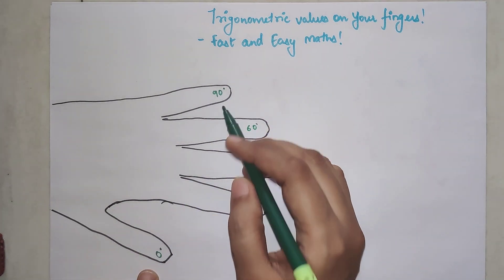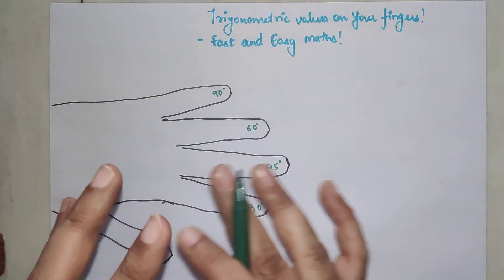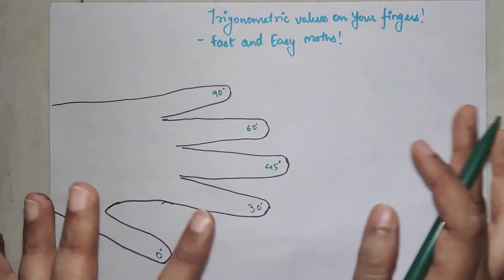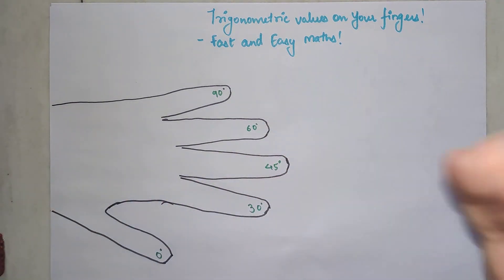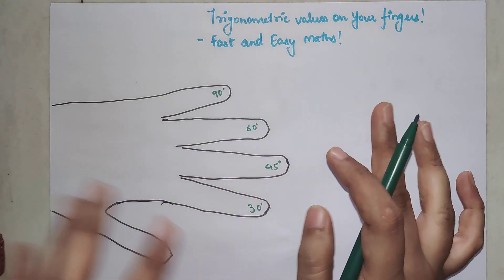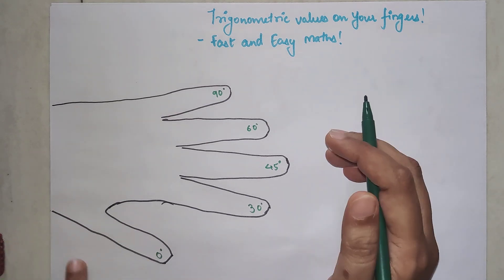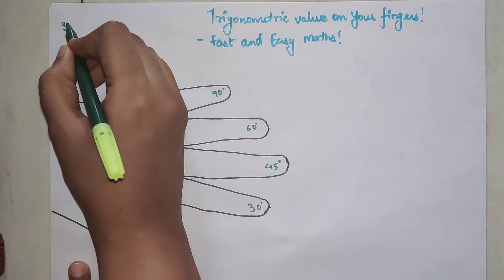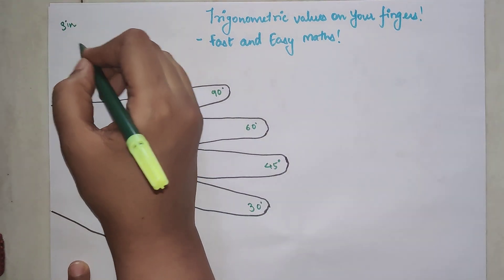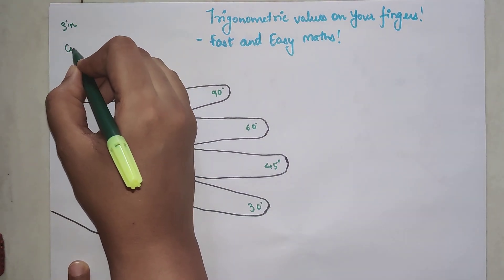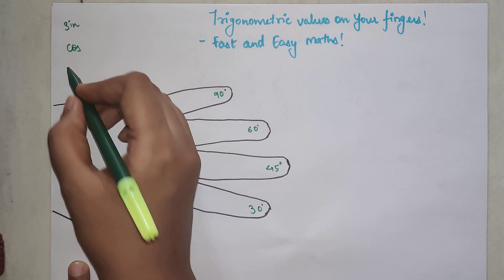So all of these are basically the standard angles which are normally asked for. And trust me after this trick you don't even have to remember the table and everything. Nothing is needed. Now please understand what we are trying to find out—I will teach you how to find sin of any of these angles on the go, cos and tan.